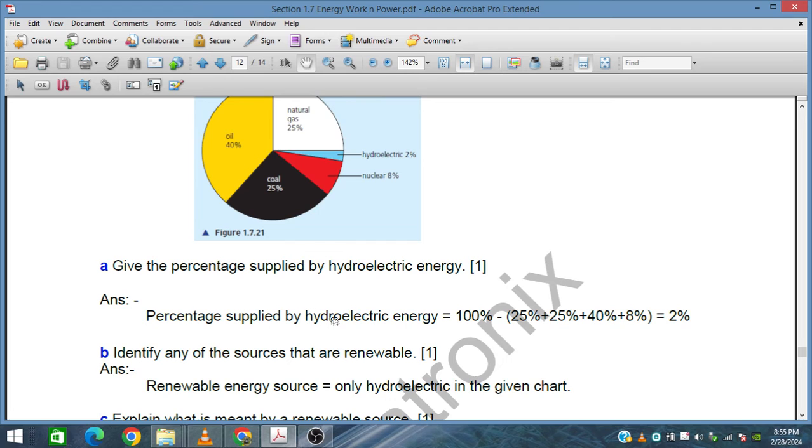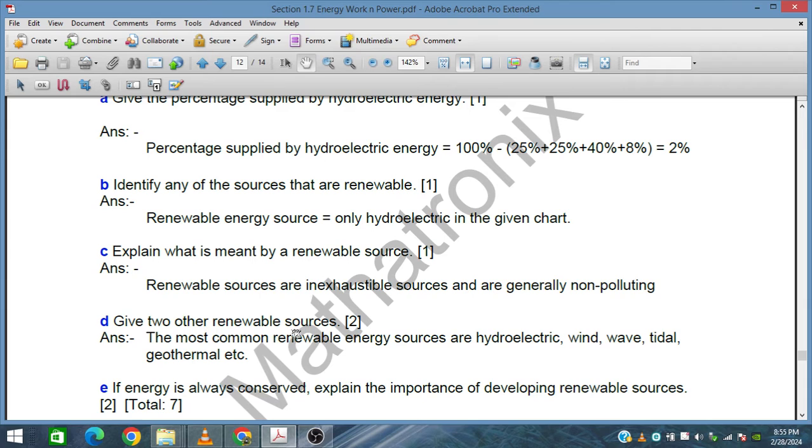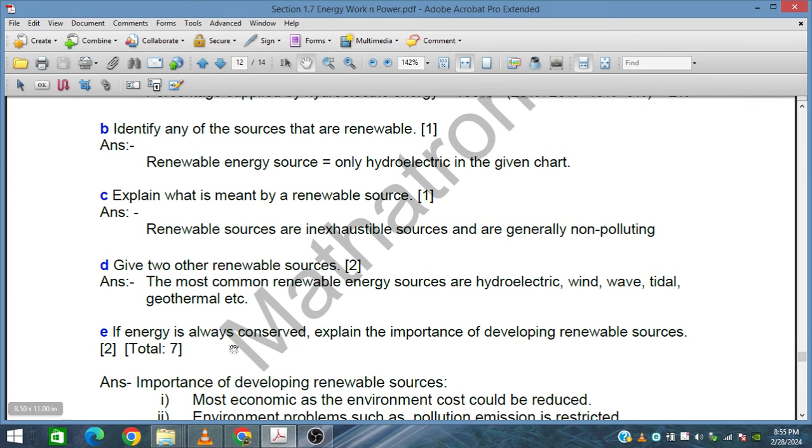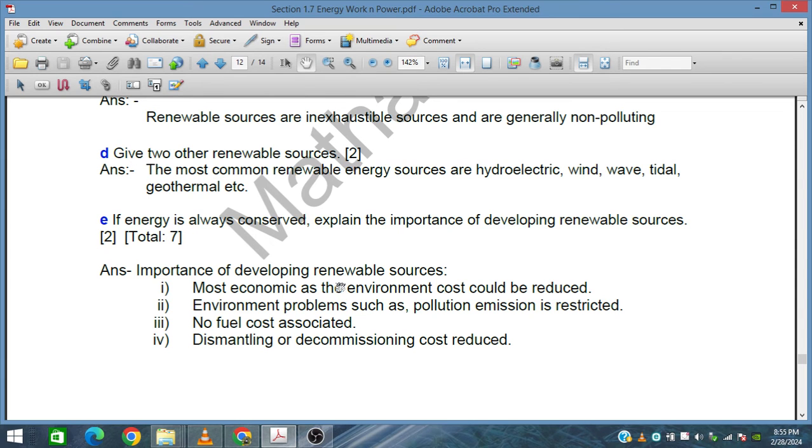Explain what you mean by renewable source. Renewable sources are inexhaustible sources and are generally non-polluting. Give two other renewable sources: hydroelectric, wind, wave, tidal, and geothermal. If energy is always conserved, explain the importance of developing renewable sources. The importance includes: most economic and environmental costs could be reduced, environmental problems such as pollution emission are restricted, no fuel costs associated, and dismantling or decommissioning costs are reduced.